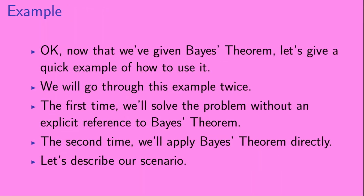Now that we've given Bayes' Theorem, let's give a quick example of how to use it. We will go through this example twice. The first time, we'll solve the problem without an explicit reference to Bayes' Theorem. The second time, we'll apply Bayes' Theorem directly. Okay, let's describe our scenario.